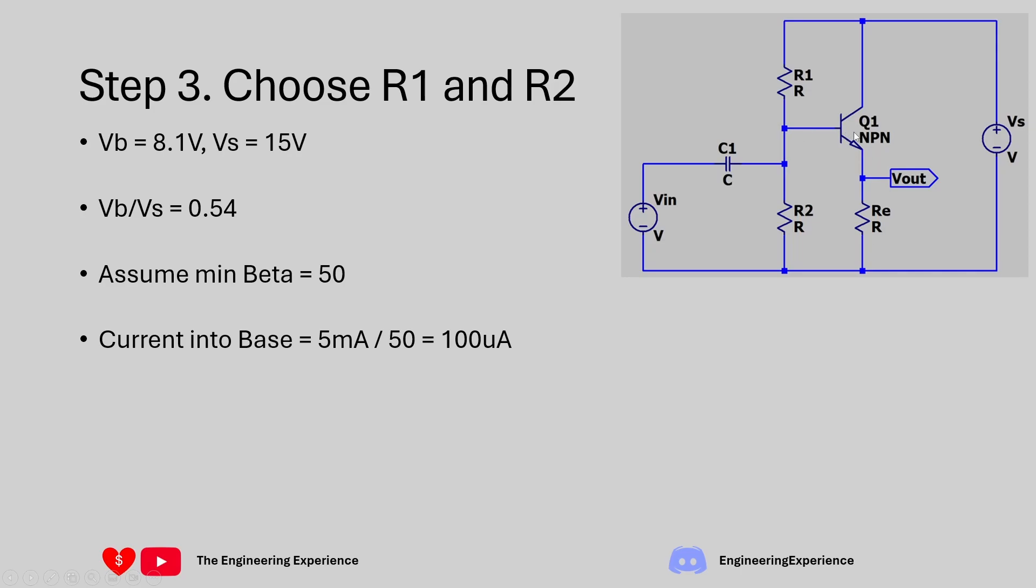If you have 100 microamps going into here we don't want to load R1 and R2 so much that it gets affected by the 100 microamps that needs to flow into this direction. So what we'll do is make sure that the current flowing down R1 and R2 is at least 10 times the current that's flowing into the base of the transistor.